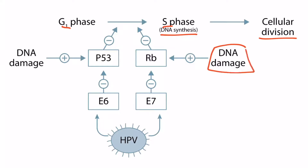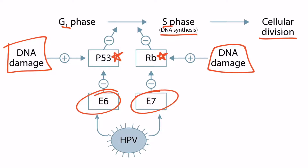From the image, notice that when there is DNA damage, P53 and RB normally stop the G1-to-S phase transition. However, if the same cell is infected by certain strains of HPV that produce E6 and E7, then P53 and RB are unable to stop the transition, and the cell continues to grow and divide despite DNA damage, which ultimately leads to cancer. In the presence of E6 and E7, P53 and RB are unable to perform their normal function, resulting in unregulated DNA synthesis and division.